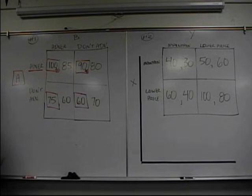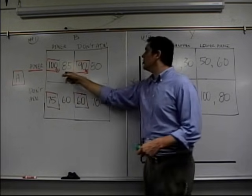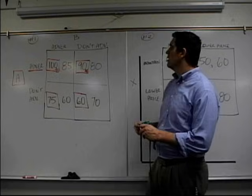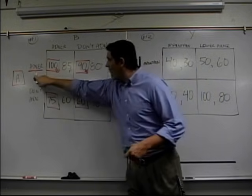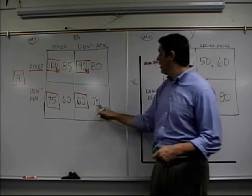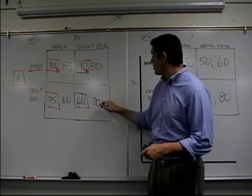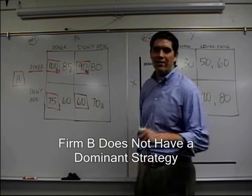Good. How about over on the other side? How about for firm B? Well, if firm A advertises, which one should they do? 85 or 80? Well, they should do 85. Okay, that's an easy one. If firm A doesn't advertise, what should they do? Should they advertise and get 60 or should they get 70? Well, they should not advertise and get 70. They do not have a dominant strategy. Firm B does not have a dominant strategy.